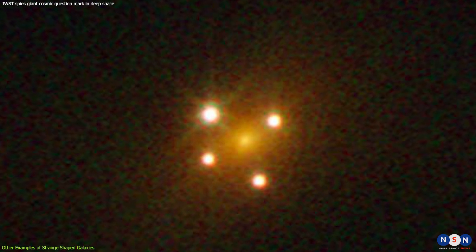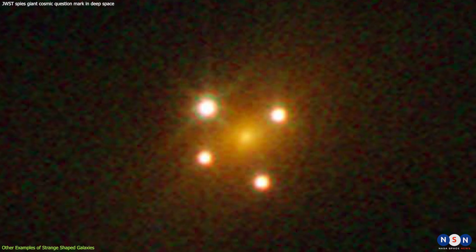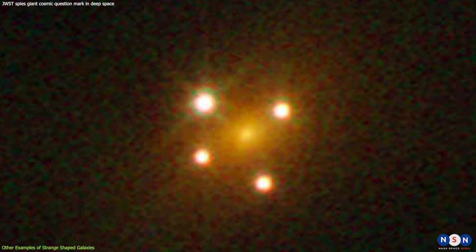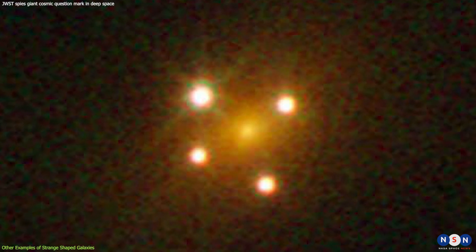One of the most famous examples is the Einstein Cross, a quasar that appears as four bright spots around a foreground galaxy. The quasar is actually a single object, but its light is split into four images by the gravitational lensing effect of the galaxy. The galaxy acts like a giant magnifying glass, bending and amplifying the light from the quasar.